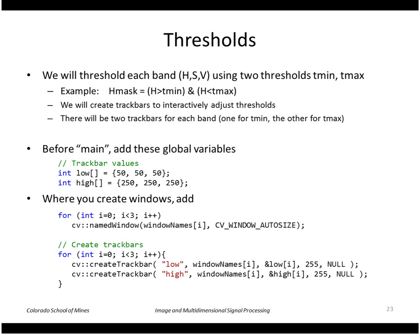Next I threshold each of those bands using two thresholds: T_min, which picks all points greater than T_min, and T_max, which picks all points less than T_max. I then perform a logical AND of those two masks to produce a mask — for example, an H mask. I do this for the H band, the S band, and the V band.